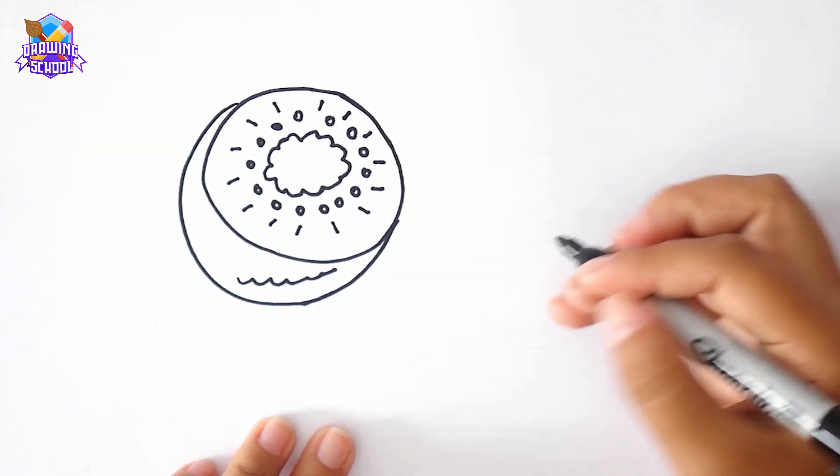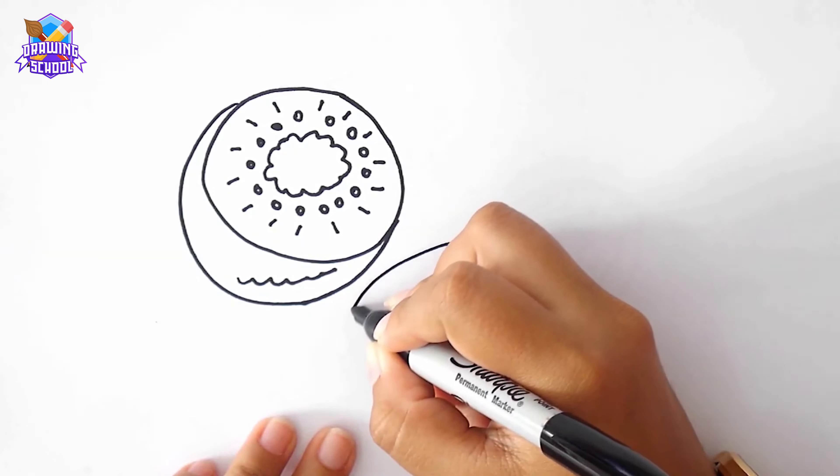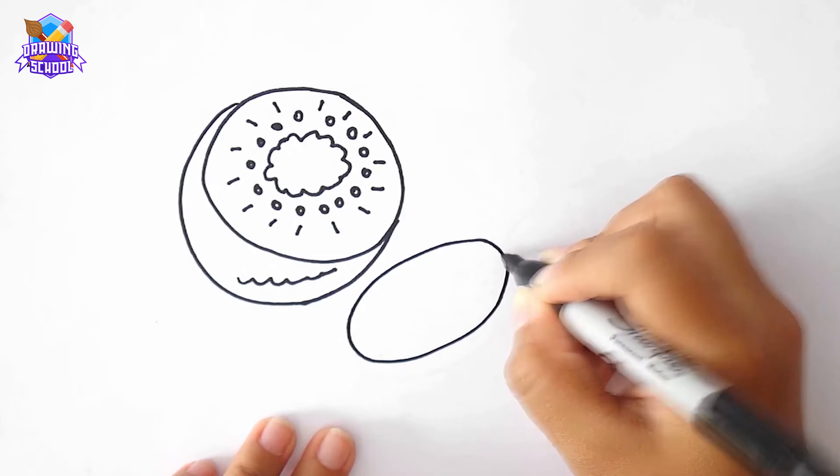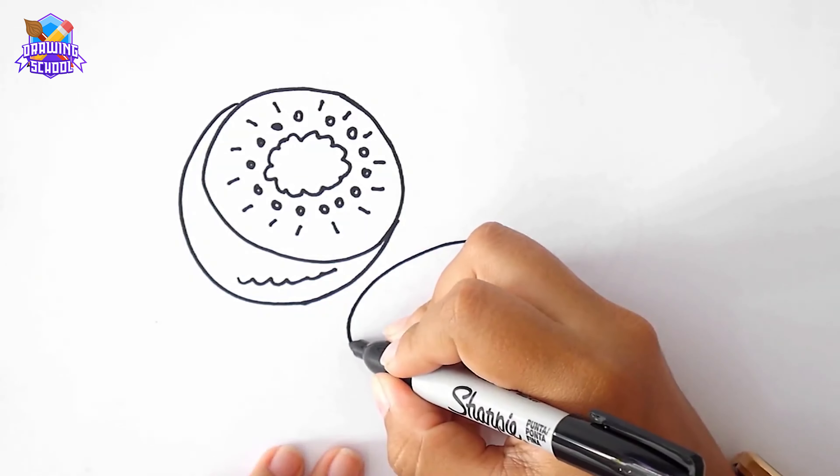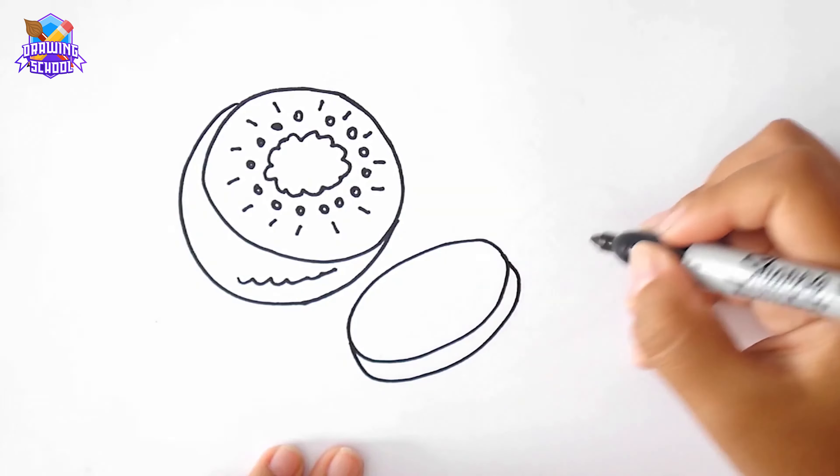We draw an oval and a backward C shape around it like we did before to give it some perspective.